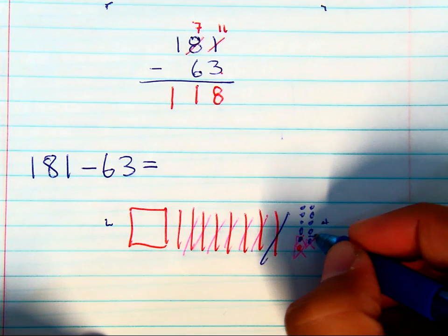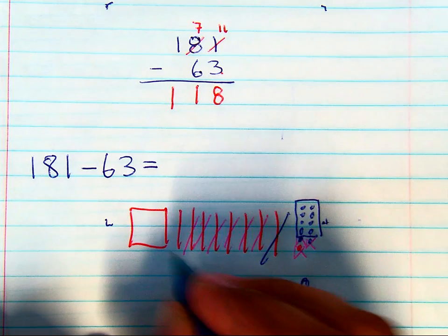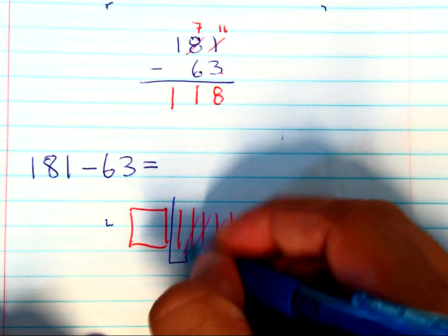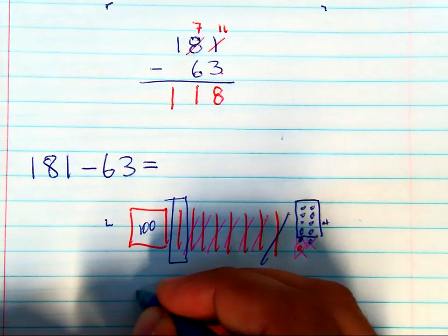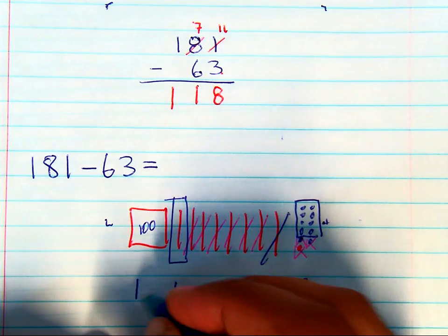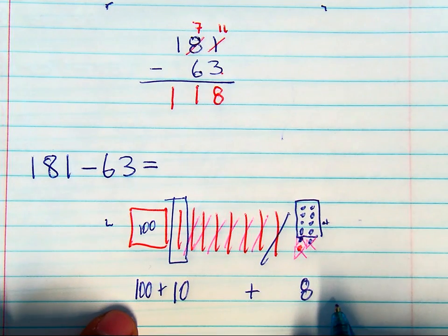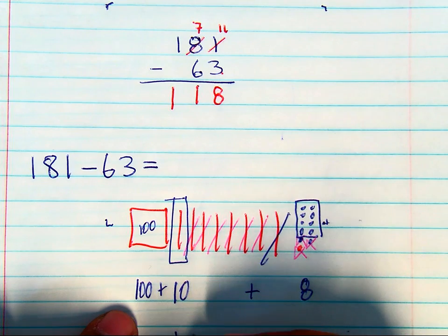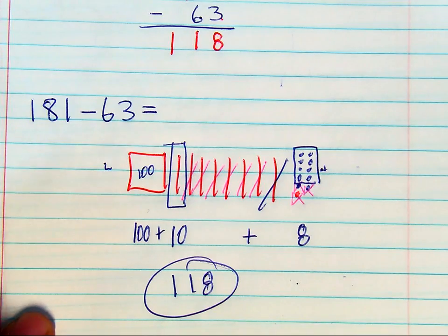You are left with 8 ones, 1 ten, and 1 hundred, which is 100 plus 10 plus 8, which is 118. Now I know that's a lot of work. I know that's a lot of steps.